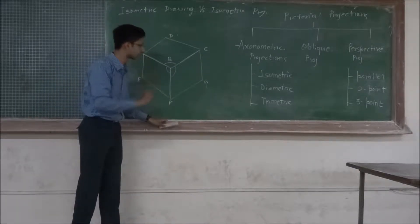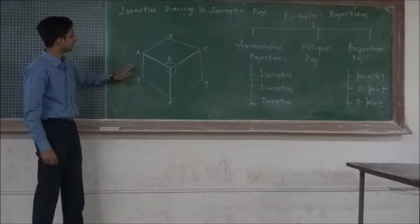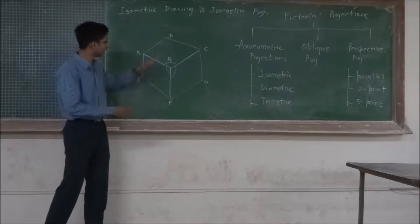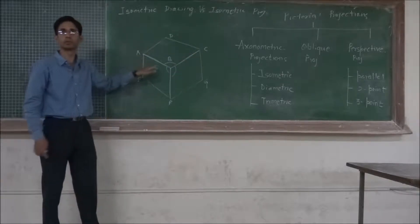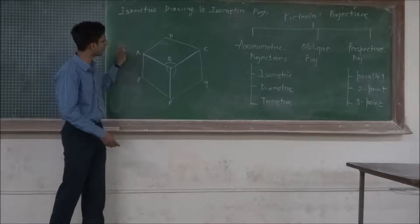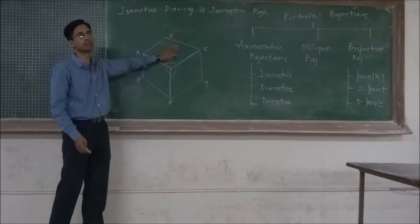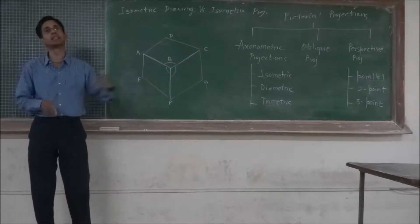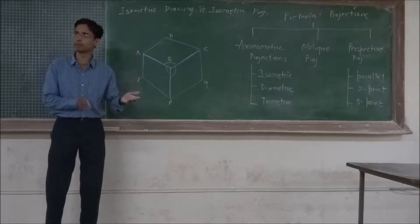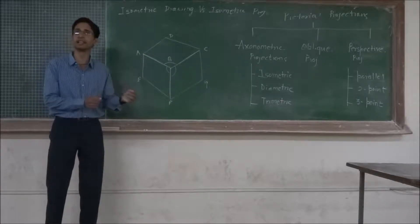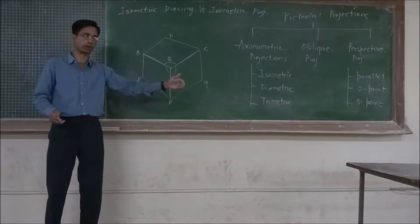We need to understand one more important thing — what is isometric scale? If you consider a tube or a square shape, a square in isometric drawing is seen as a rhombus. Similarly, a circle will be seen as an ellipse. That means there is a change of shape and also a change of length whenever we move from the original object to the isometric drawing.